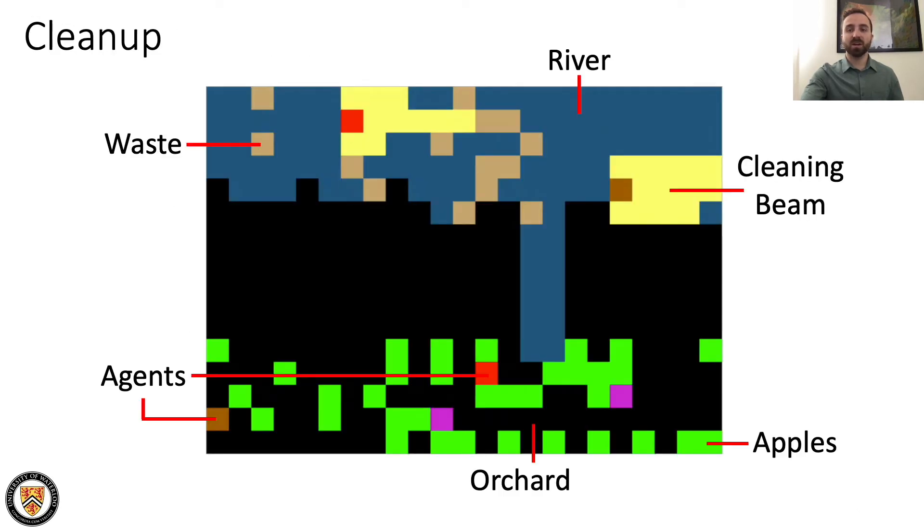We expand our evaluation to the cleanup domain to study how credo generalizes to more complex environments, since agents must now learn entirely cooperative policies instead of choosing an explicit cooperation action like in the IPD. Agents must learn to clean a river to help spawn apples in an adjacent orchard. The social dilemma is that agents must learn to clean the river in order to spawn apples, although everyone would prefer others to clean the river for them.